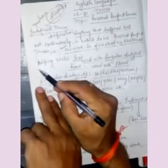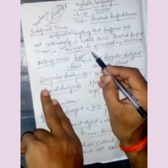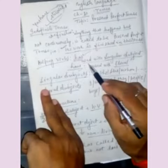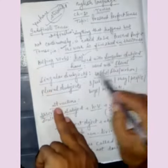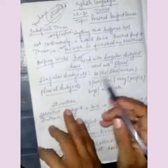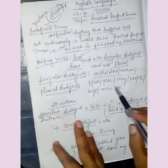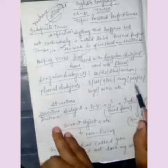There are two helping verbs. One is has, second is have. Has is used with singular subject. Have is used with plural subject. Singular subjects - kone kone ho saktay hai - he, she, any name like Mohan, Rohan, etc. Plural subjects - kone kone ho saktay hai - I, you, they, people, boys, men, etc.